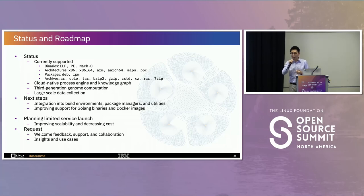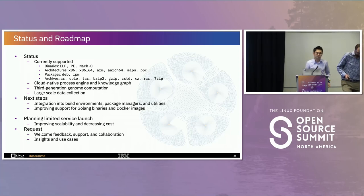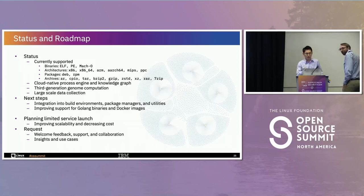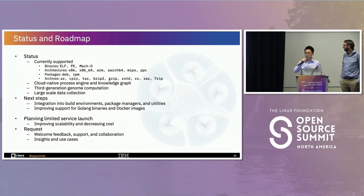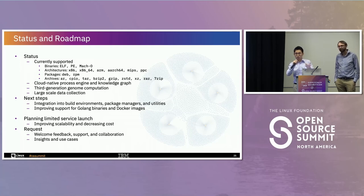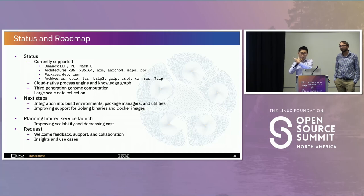Q&A begins. On mapping from binary to original source code: at the moment, we ingest trusted sources of data — like Debian and Ubuntu repositories — to get the actual binary gene and associated metadata. If we have source code, we can build it, generate the gene, and capture the relationship in the knowledge graph as a link showing that this source code was used to generate this binary.